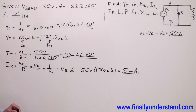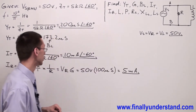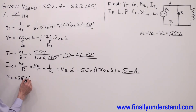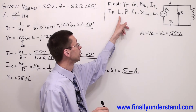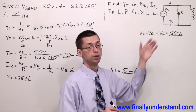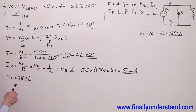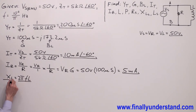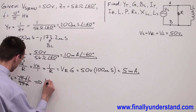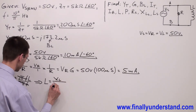Next, we're supposed to find the inductance. In order to find inductance, I need to remember the formula: XL equals 2πfL. This is the section of the problem which talks about the parallel circuit. In order to find L, I simply solve this formula for L by dividing both sides by 2πf. The 2πf terms cancel, giving L equals XL over 2πf.